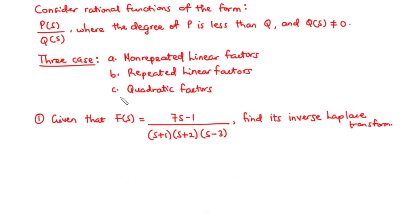We have an example here. Given that f(s) equals (7s minus 1) divided by (s+1)(s+2)(s-3), we are going to find its inverse Laplace transform. This is an example of a rational function with non-repeated linear factors. Let's try to solve this problem together.